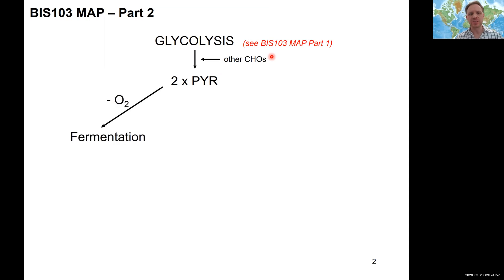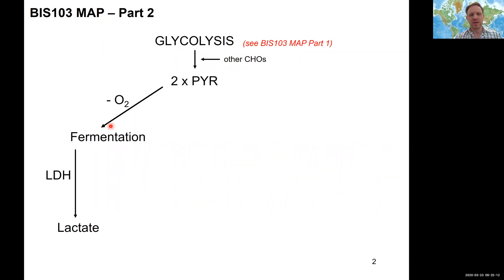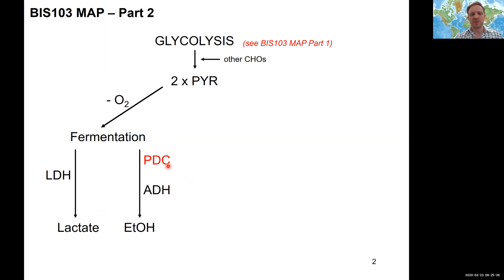In the last lectures we had started to talk about what happens to pyruvate under different conditions. One condition being under anaerobic conditions, in the absence of oxygen. We talked about two major fermentation pathways: one being lactate dehydrogenase (LDH) breaking down pyruvate to lactate, and the other being ethanolic fermentation, converting pyruvate into ethanol using pyruvate decarboxylase and alcohol dehydrogenase.